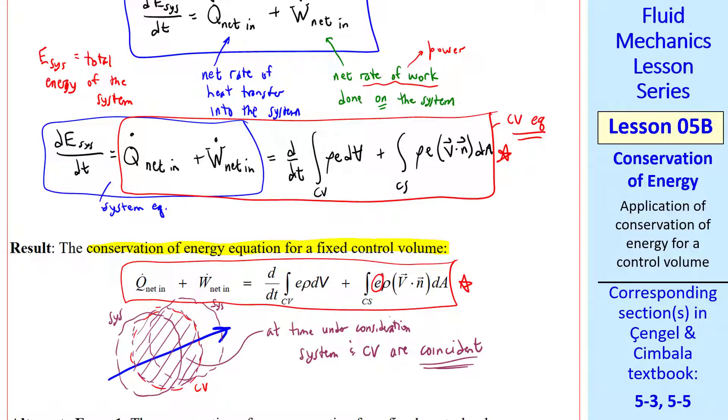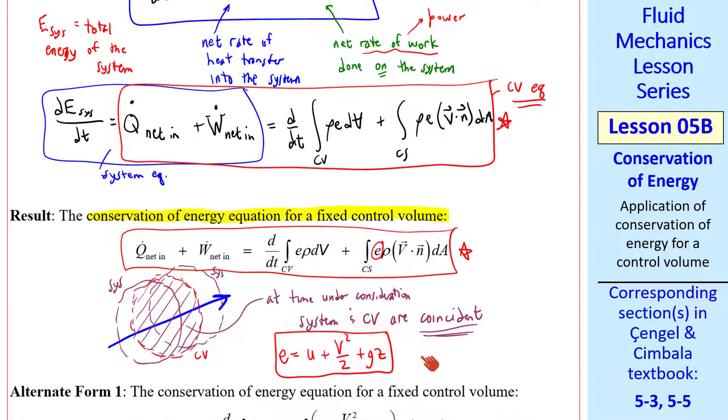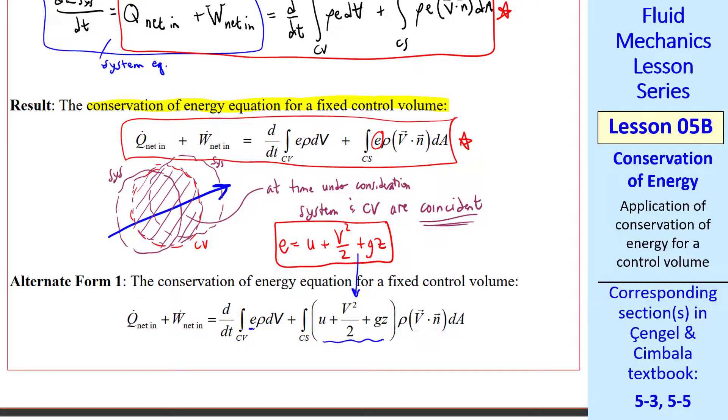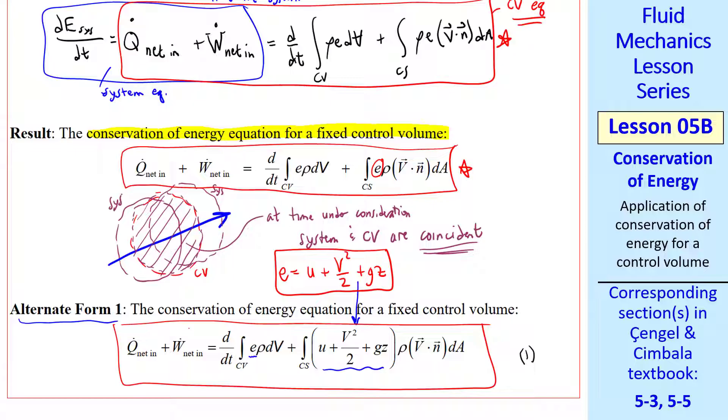Now let's look at this specific total energy term. e is made up of specific internal energy (by the way, don't confuse this little u with the component of velocity in the x direction, this is capital U over m), specific kinetic energy (½mv² divided by m), and specific potential energy (mgz divided by m). Let's plug that into the control surface integral. But for convenience, we'll leave e as it is in the volume term. I call this alternate form 1 of conservation of energy for a fixed control volume.